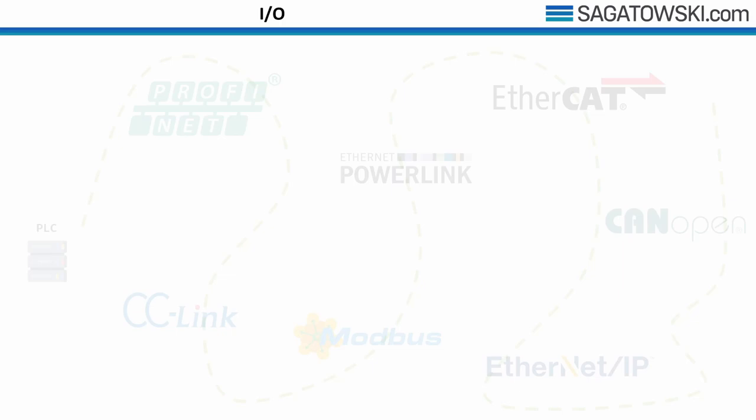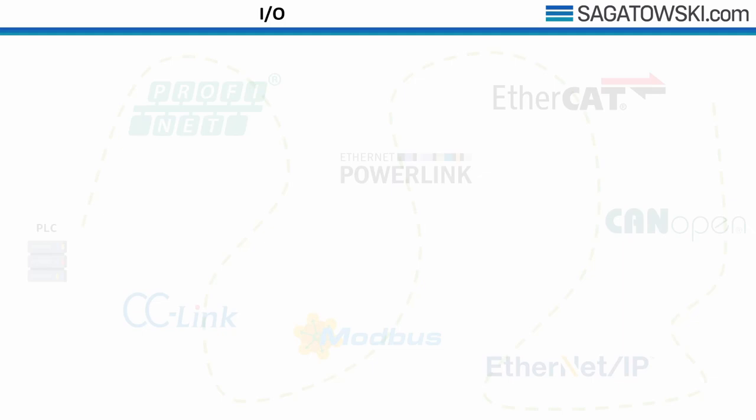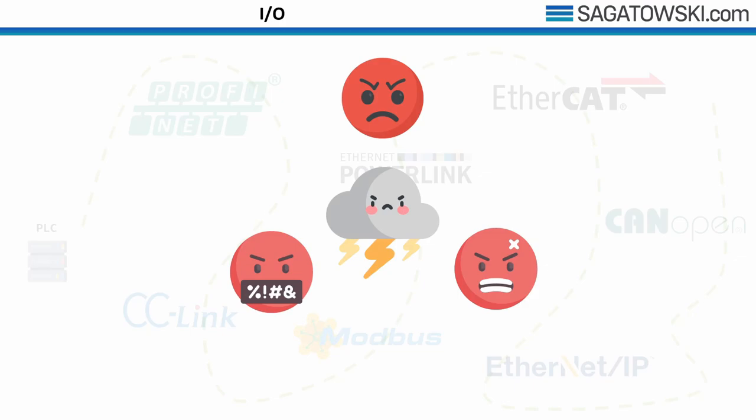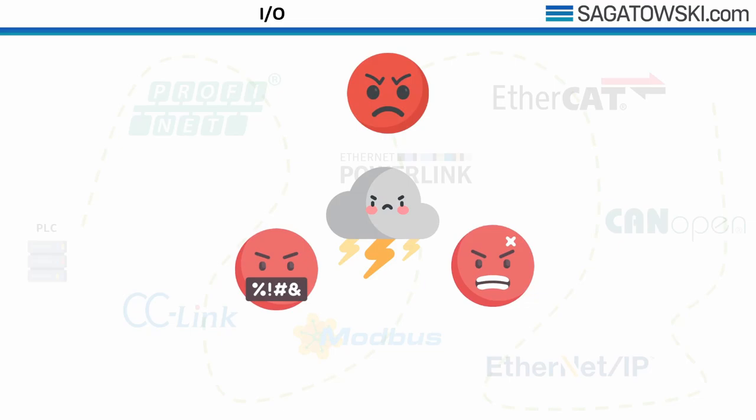I will not do any comparison between these fieldbuses in this tutorial. One reason is that it's outside the scope, but also there are few things in the automation industry that get people as engaged and upset as comparing different fieldbuses. People have their favorites and defend them like a religion or political party. Every company backing its respective fieldbus has invested money and wants a return. I'll simply leave it up to you to find comparisons on the internet.